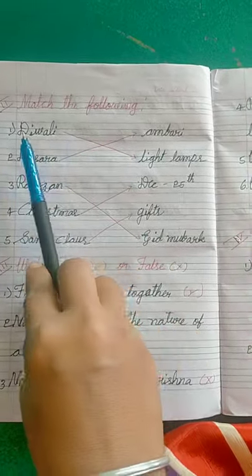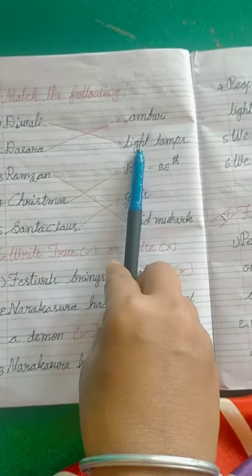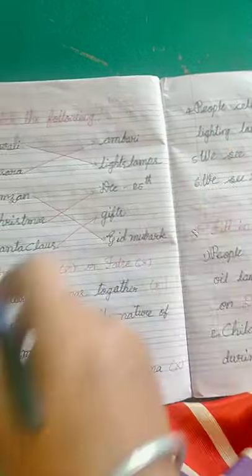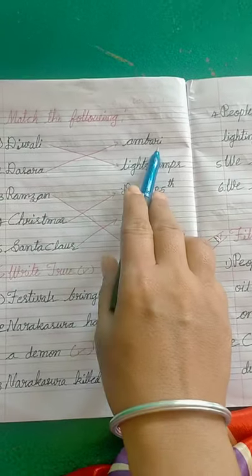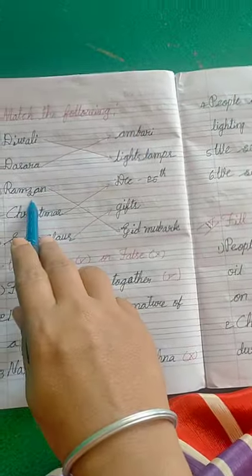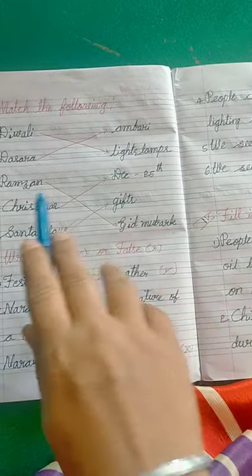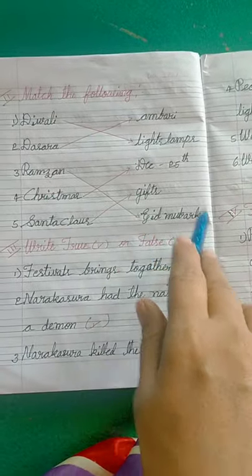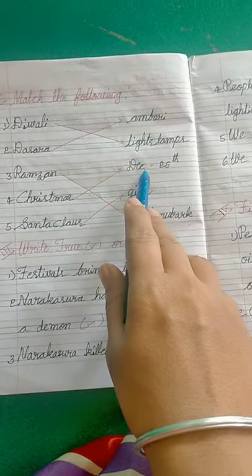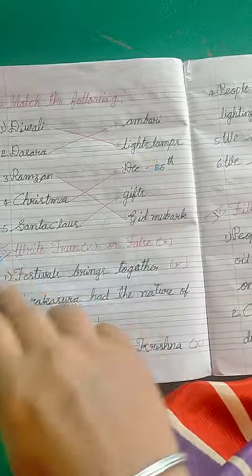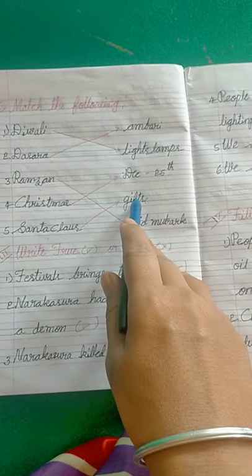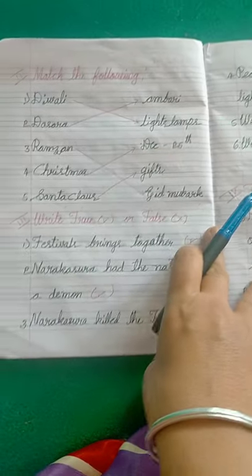I have already matched them. Diwali — lights of lamps. Dasara — Ambari. Ramzan — Eid Mubarak. Christmas — December 25th. Santa Claus — gifts. You have to match them.